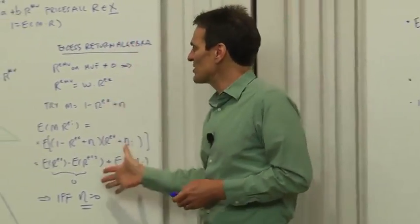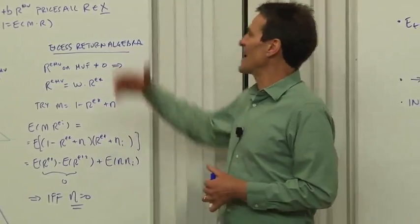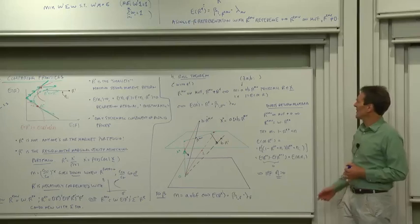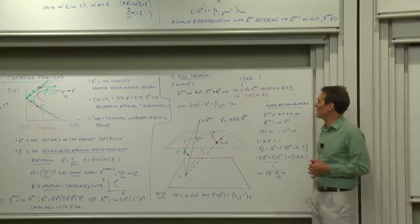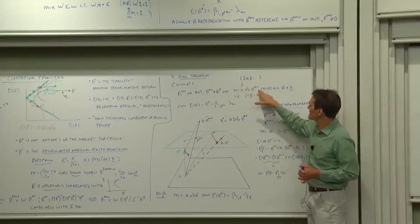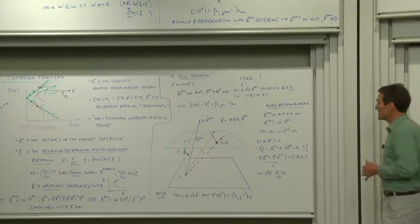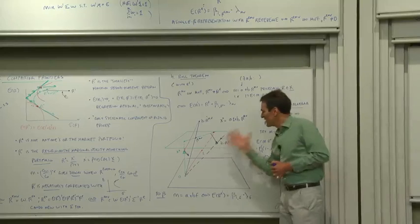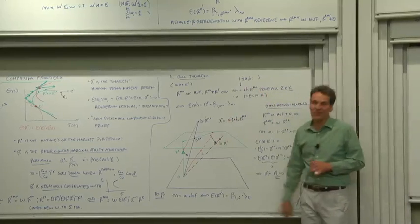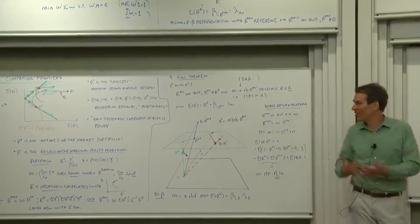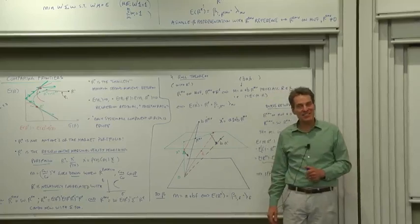So that's the same logic that we use in the more general cases, with and without risk free rates, with actual returns, you just have to show algebraically, try an M of the right form and show that that M works if and only if the return is on the mean variance frontier. So there's the Rolle theorem in its payoff space representation and connected to discount factors, completing our tour of all the various different representations of asset pricing ideas.